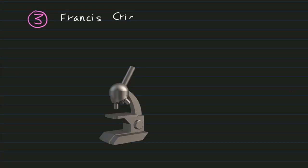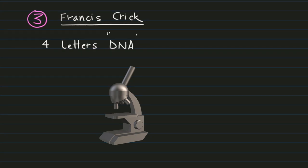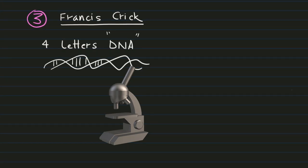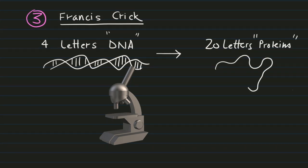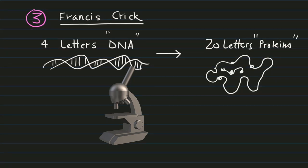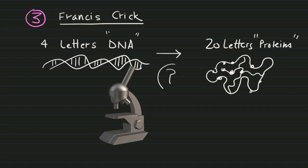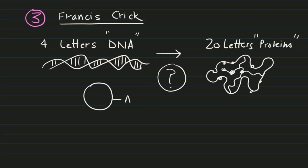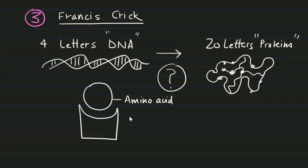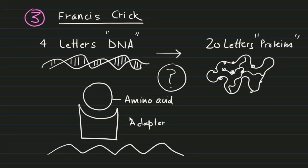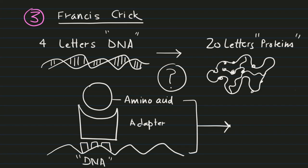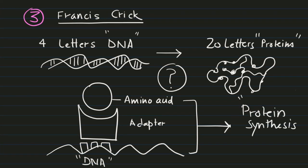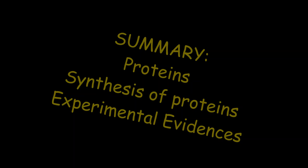Third important contribution was provided by Francis Crick. He asked how four letters of DNA can transfer information in the form of 20 letters of proteins. He suggested that amino acids have the ability to bind to adapter molecules that further bind to DNA molecules to transfer the information in the form of protein. Later, this process was termed translation.